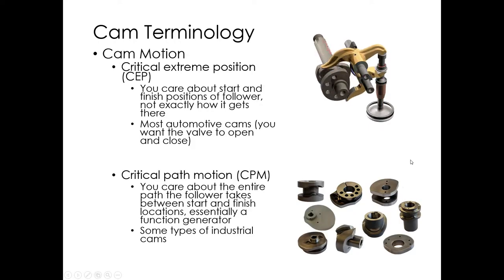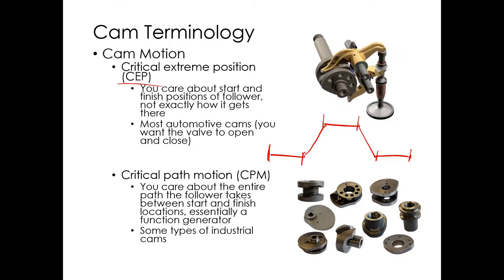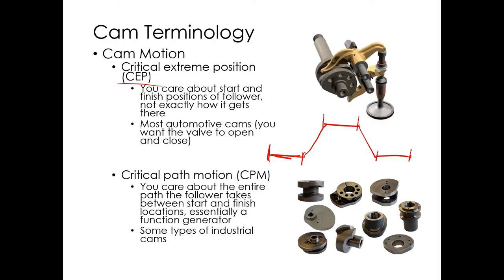Motion programs: critical extreme position (CEP) is where you care more about the timing and the extremes — you want the follower in one position, then another, and you care about how long it dwells at each extreme. An automotive cam is a good example: you care about how long the valve is open, how long it's closed, and the relative timing of those events. You want smooth motion in between, but you don't care about the exact shape of the connecting curve.